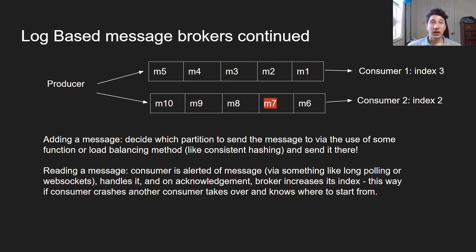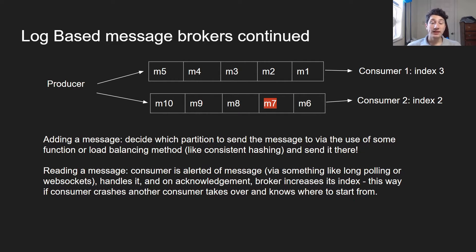Each consumer is keeping track of which index it is currently reading in the log. This shows us which messages have already been handled, so if that consumer fails, we have the fault tolerance of saying we're not going to accidentally reprocess this message. Now that consumer 2 is reading M7, it can go ahead and say now we're on index 2, which means the next message we should be reading is M8. The second that the message broker receives an acknowledgement by the consumer that it successfully read a message, it's going to increment that index locally, thus keeping track of how much the consumers have read.